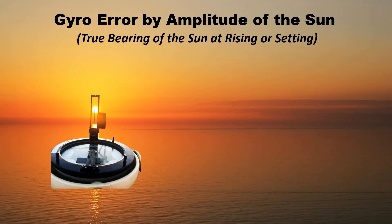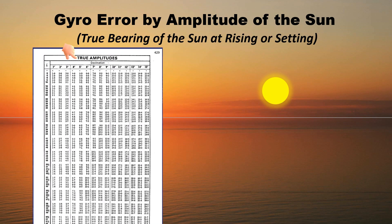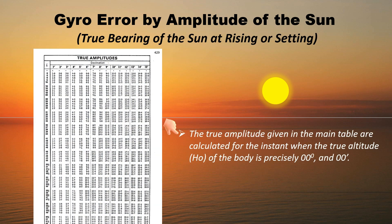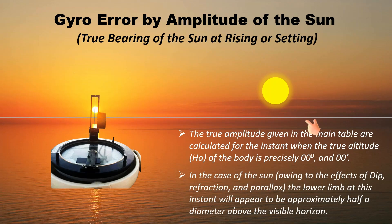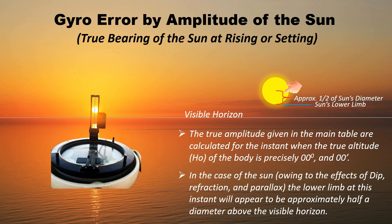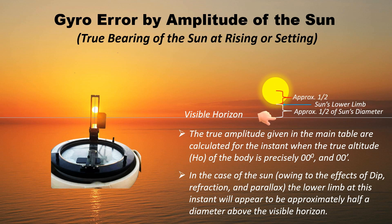When taking the compass bearing of the sun at sunrise or sunset, and if you are using the amplitude and correction tables which can be found in Norie's Nautical Tables, the true amplitude given in the main table are calculated for the instant when the true altitude of the body is precisely zero degrees and zero minutes. In the case of the sun, owing to the effects of dip, refraction, and parallax, the lower limb at this instant will appear to be approximately half a diameter above the visible horizon.